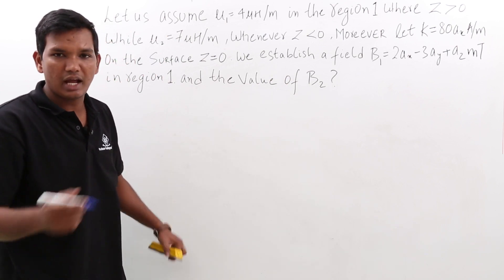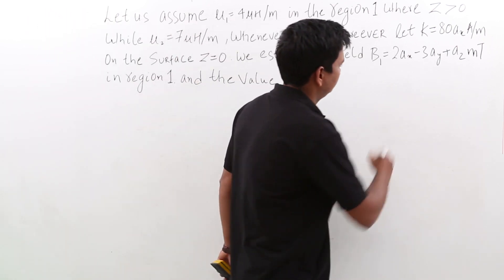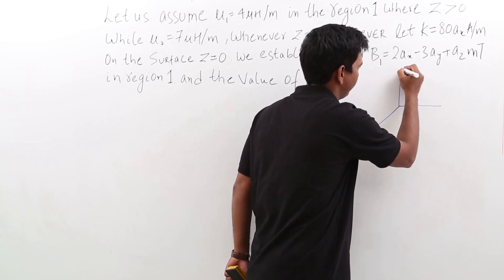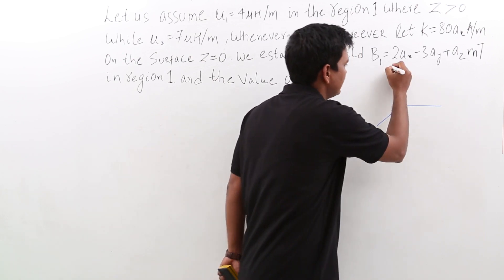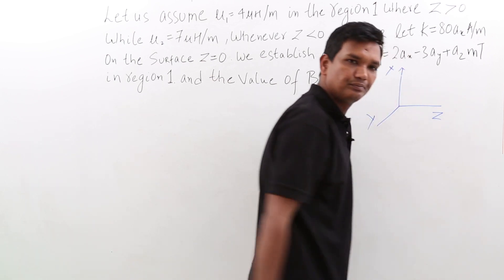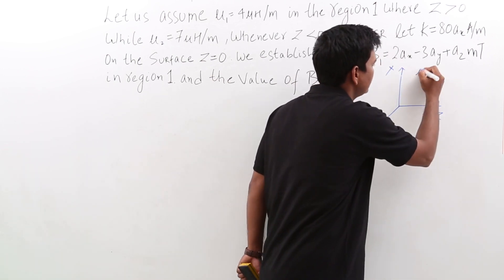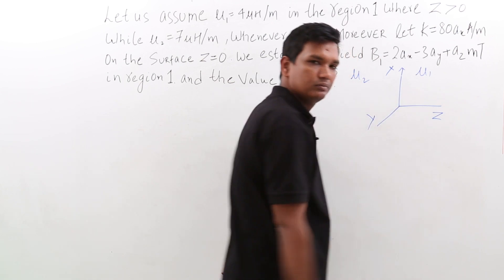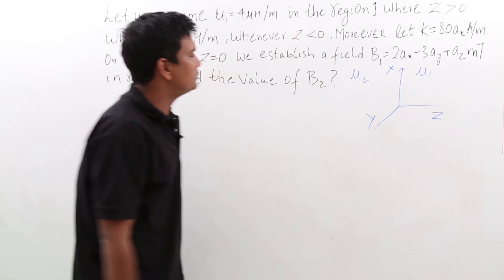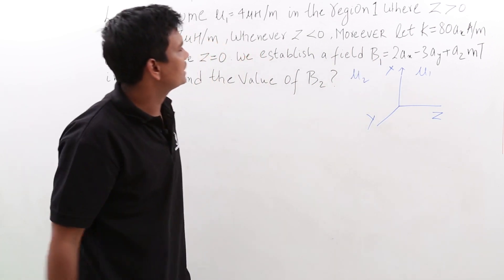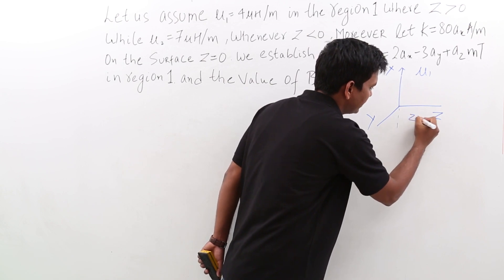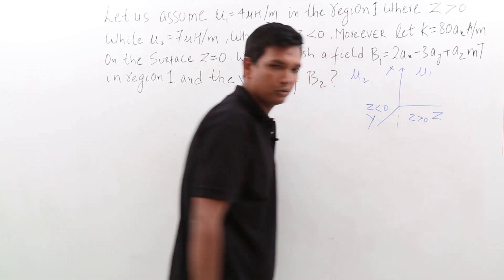Let us draw this and understand the problem. The x, y, and z axes are set up with mu 1 above and mu 2 below. The boundary separating the two regions is the plane z = 0, so region 1 is z greater than 0 and region 2 is z less than 0.